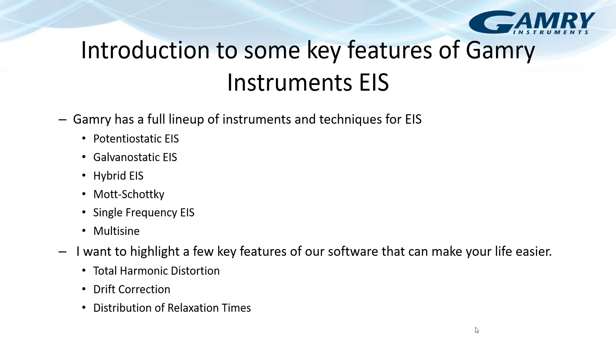So in this short video, I just want to highlight a few key features of the software that can make your life easier. Those are total harmonic distortion, which is a way to measure non-linearity in your cell's response. Drift correction, which is a way to correct for your cell's voltage drifting. And also in terms of analysis then, I want to show you a function called distribution of relaxation times, which is a method to convert frequency data into time domain data to help you identify how many RC time constants you might have.